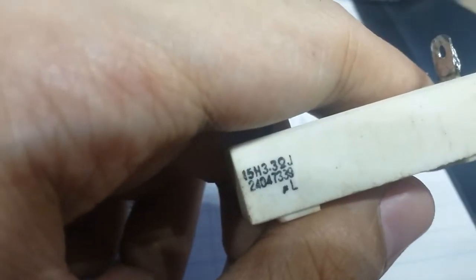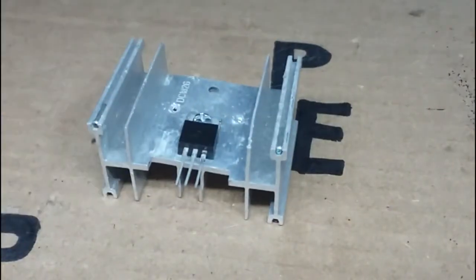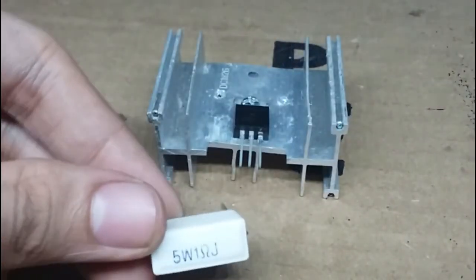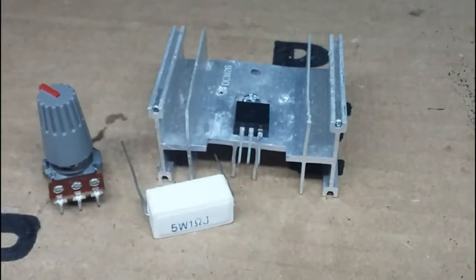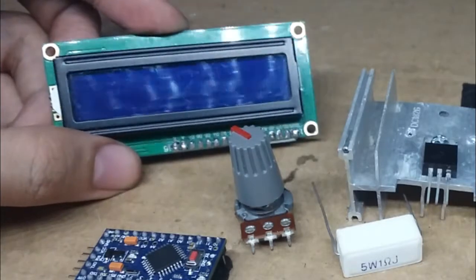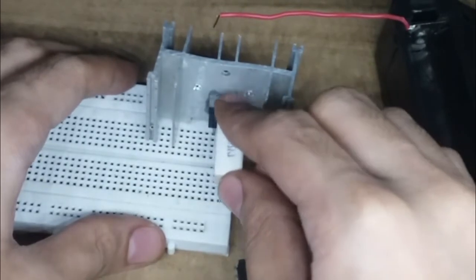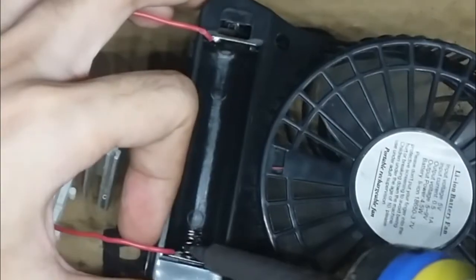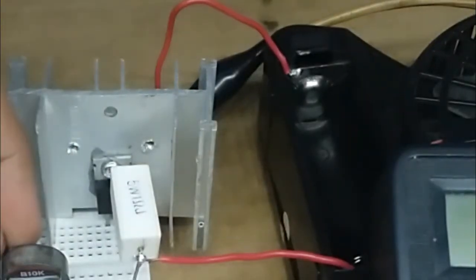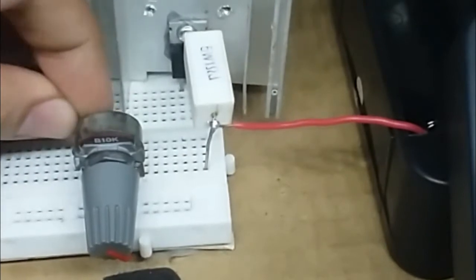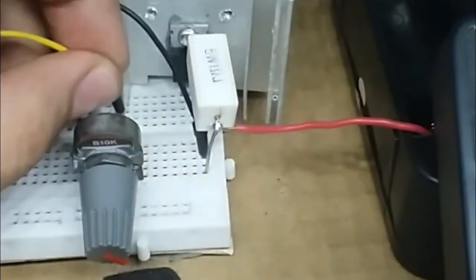Instead of using a fixed value resistor for our load, we use an n-channel MOSFET attached on a heatsink. And this 1 ohm 5 watts resistor as our shunt resistor. A potentiometer so we can have a variable resistance. And LCD so we can see the reading. Now, we need to connect the first terminal of the shunt resistor to the source of our MOSFET. And connect the other leg to the negative of the battery. Connect the drain of the MOSFET to the positive of the battery.